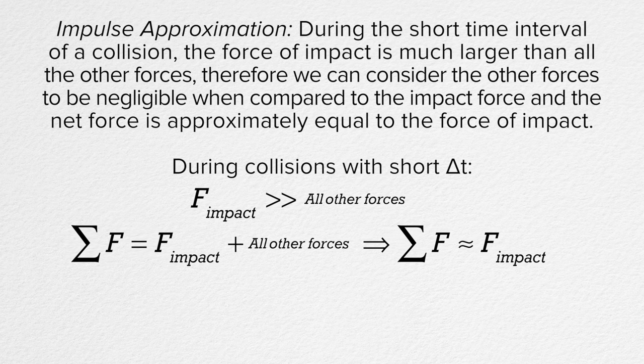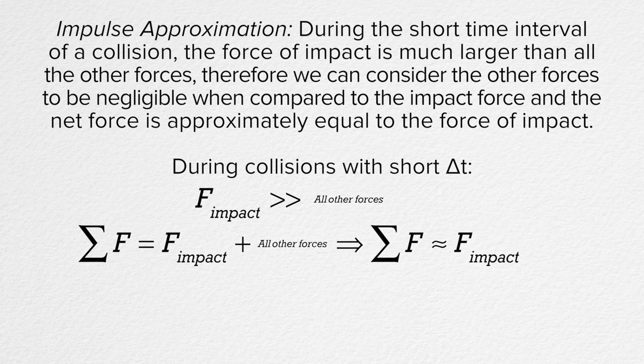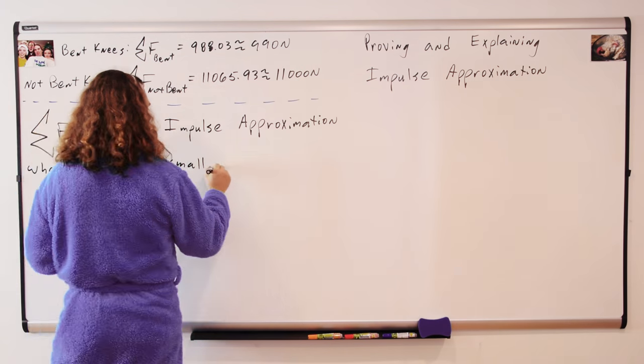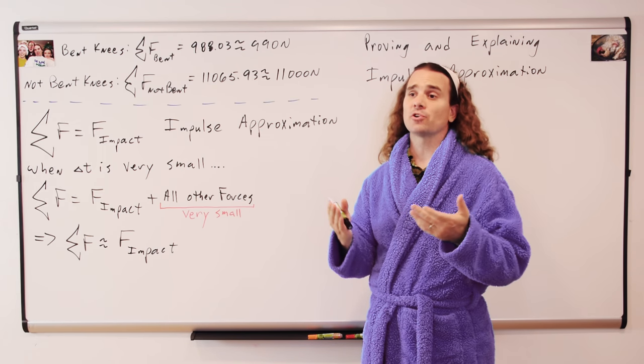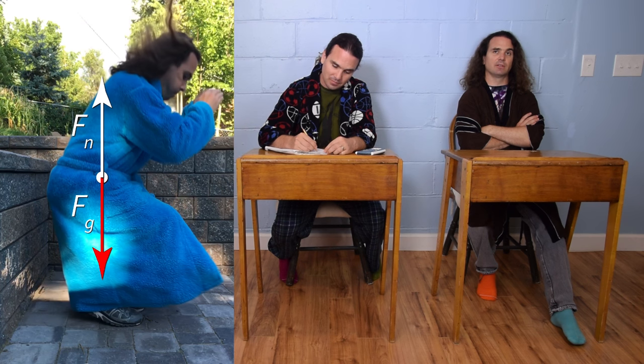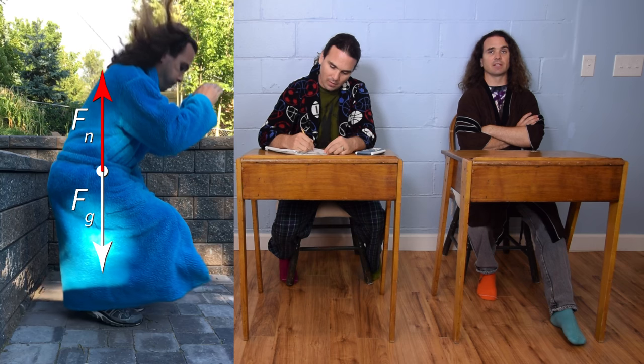This begs the question, was this actually true in these two examples? Bo, what are all the forces acting on my body during the collision? The force of gravity is straight down and the force from the ground, or the force normal, is straight up.